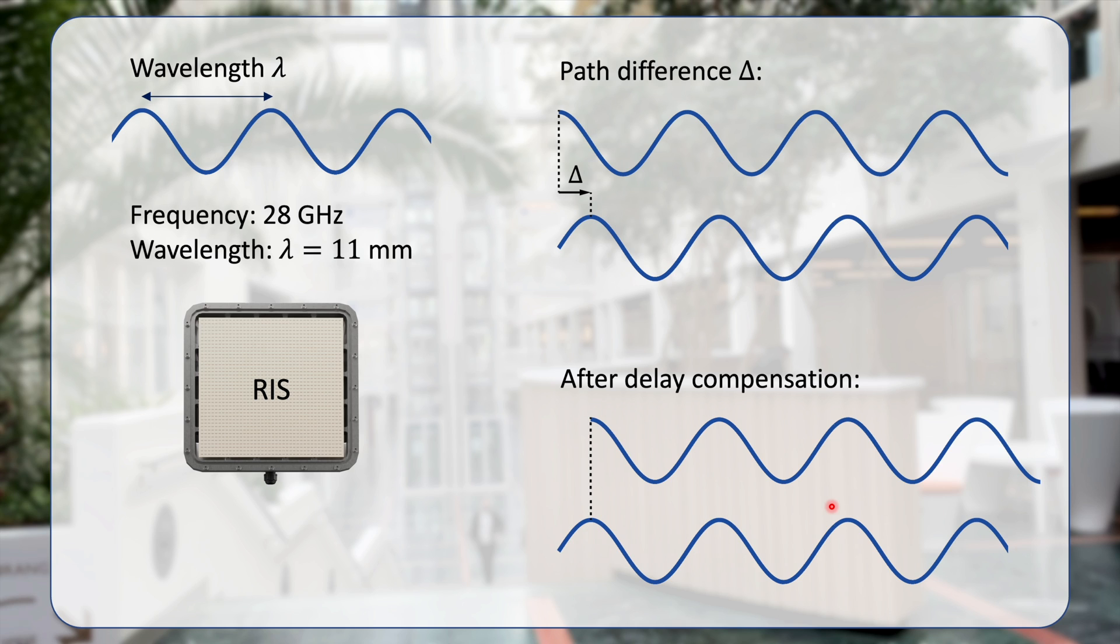Since the wireless signal is repeating itself after one wavelength, we never have to delay it more than one wavelength. Therefore, we often are talking about phase shift measured in degrees between 0 and 360 degrees, with 180 degrees being in the middle here.